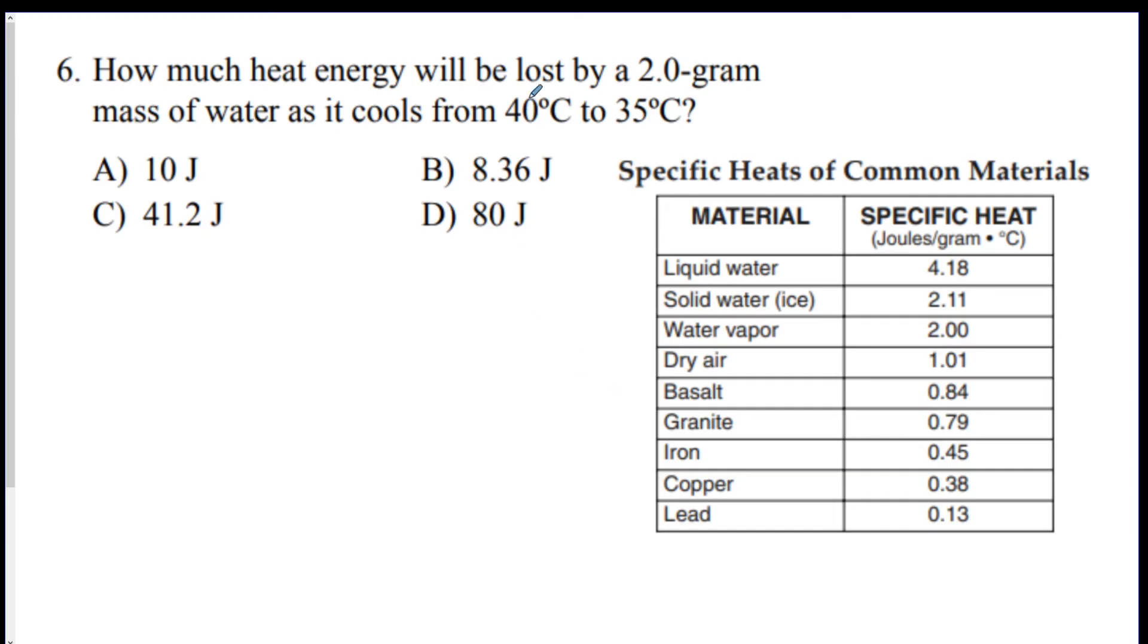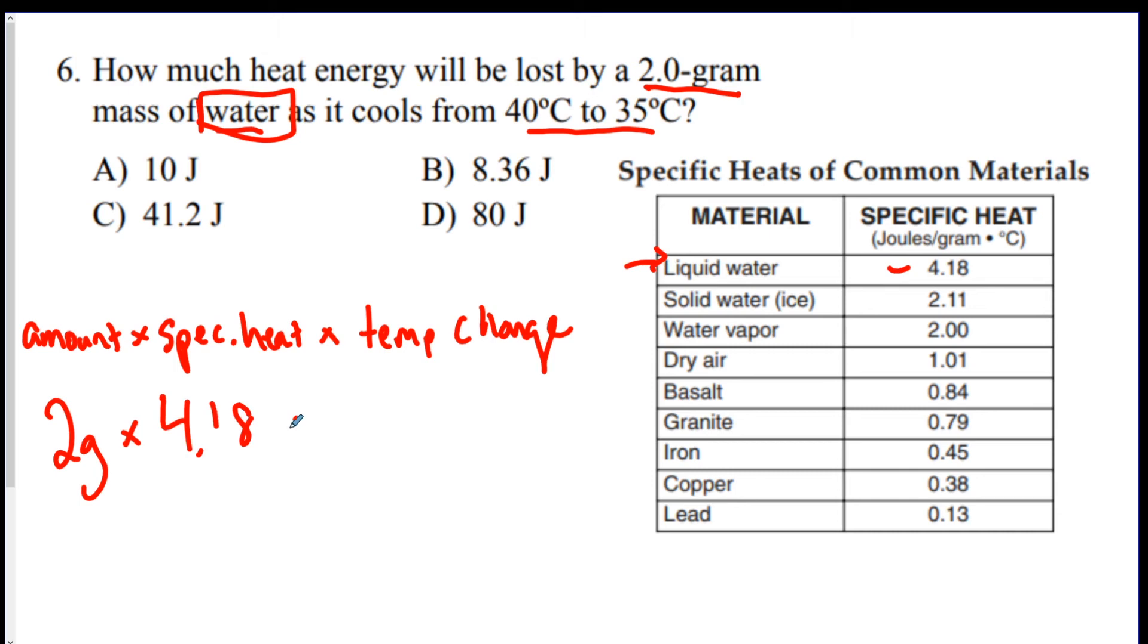Number six. A little math question. How much heat energy will be lost by a two gram mass of water as it cools from 40 degrees Celsius to 35 degrees Celsius? So, for this one, this is a specific heat question. And here is the little math formula. You do the amount times the specific heat of the material times the temperature change. So, the first thing you do is you're going to want to say, okay, what is the amount? Well, it says it right here. Two grams. Times whatever the material is. They want to know about water. And it's in the liquid phase because it's above freezing. So, 4.18 is the specific heat. Times however much the temperature changed. In this case, the temperature changed. It went from 40 to 35. So, it changed by 5 degrees.